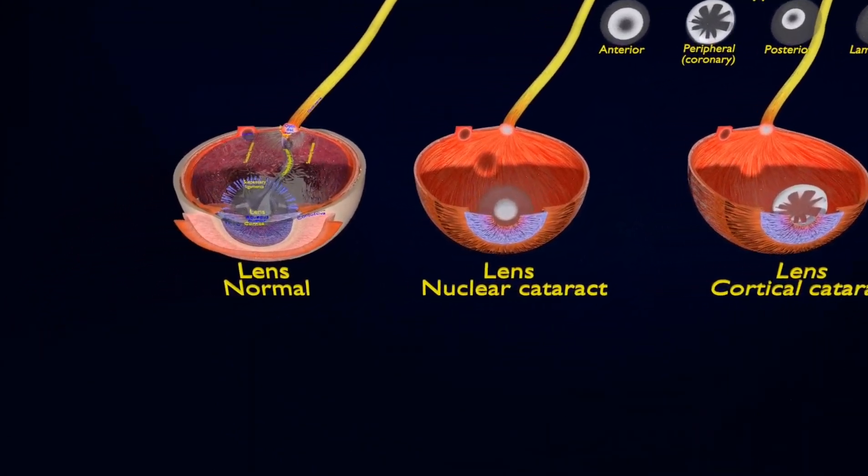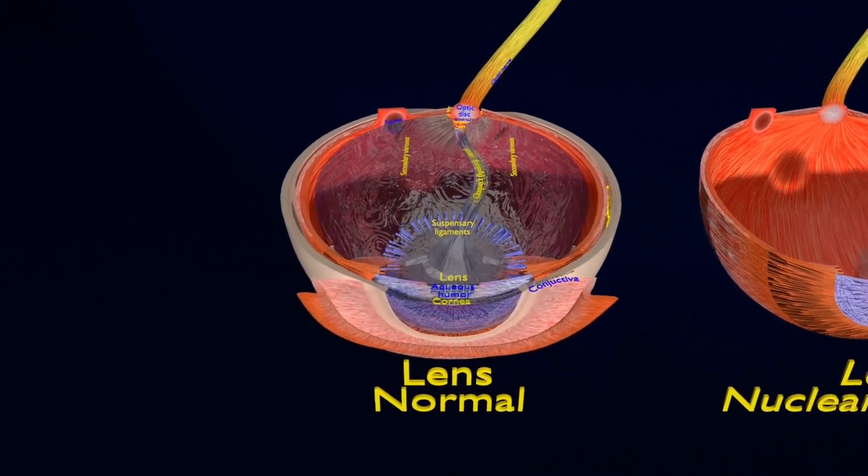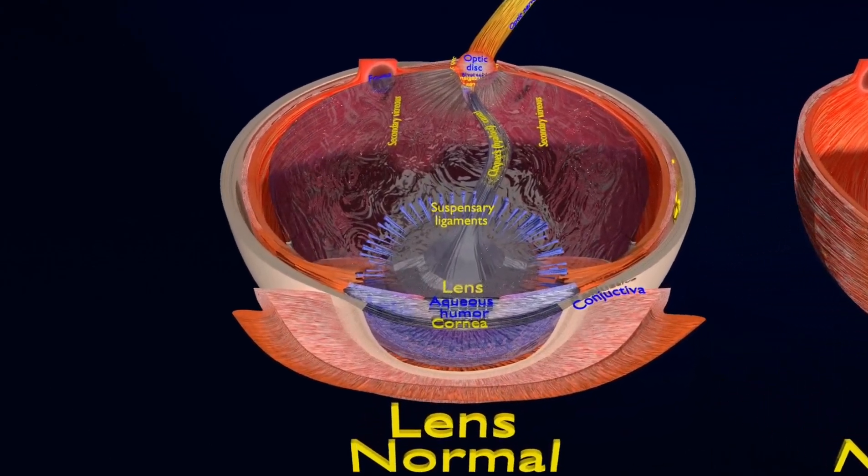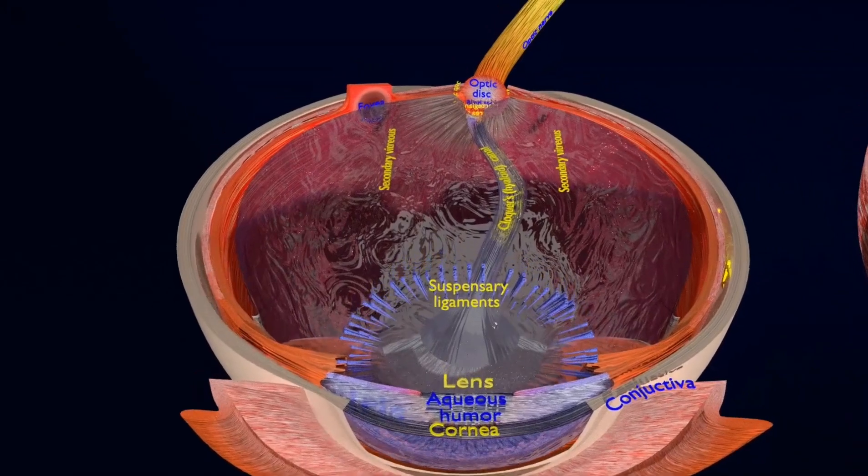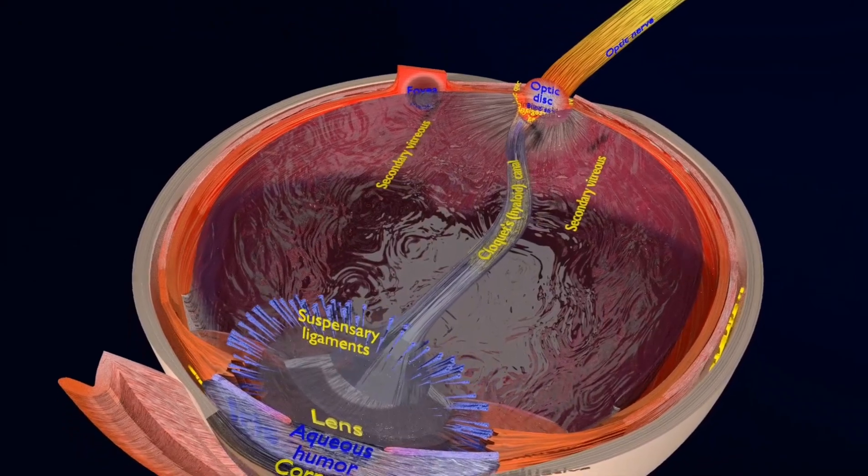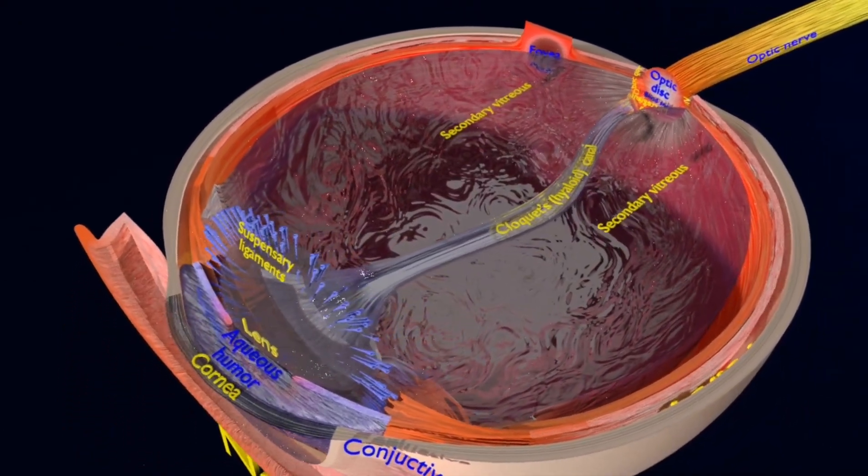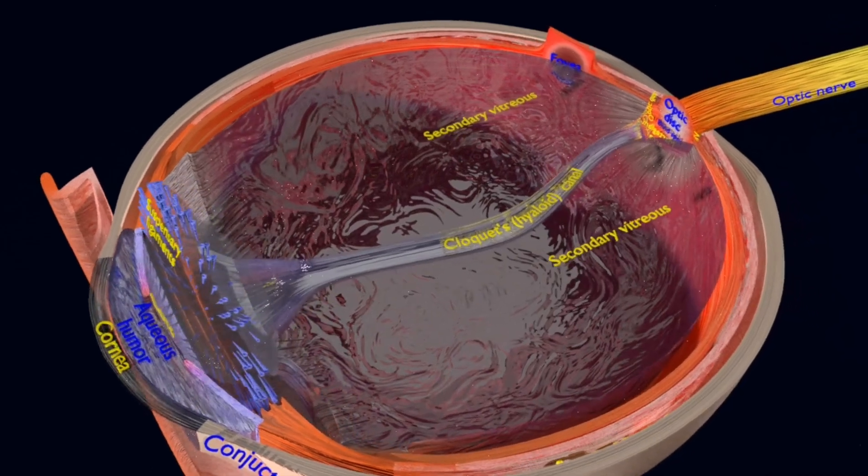In the normal eye, the light passes through the cornea. The cornea is shaped like a dome and bends light to help the eye focus. Some of this light enters the eye through an opening called the pupil. The iris controls how much light the pupil lets in. The light then passes through the lens.